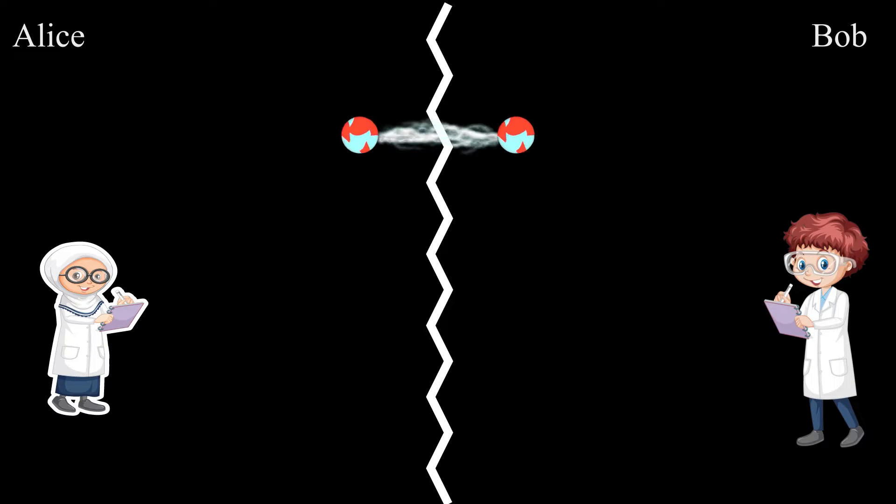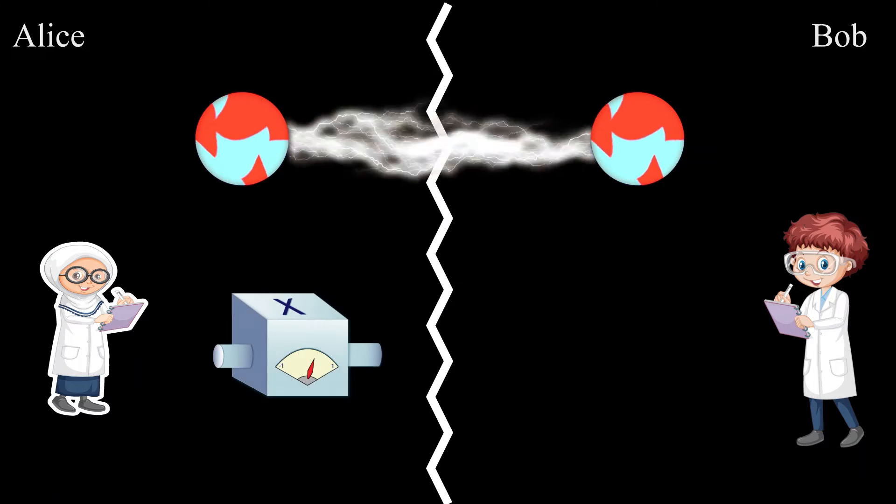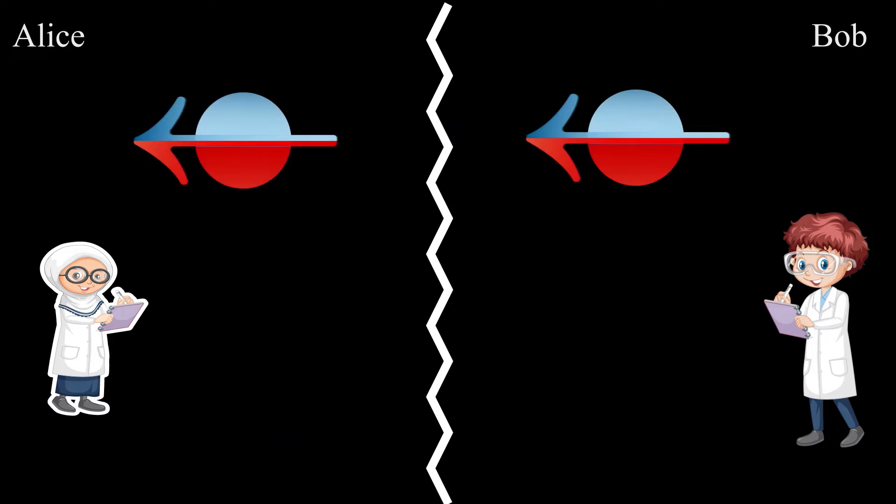For example, if Alice and Bob share an entangled pair of electrons and Alice measures her spin in the X direction, then Bob's spin will also end up spinning in that direction, and similarly if she measures in the Z direction.